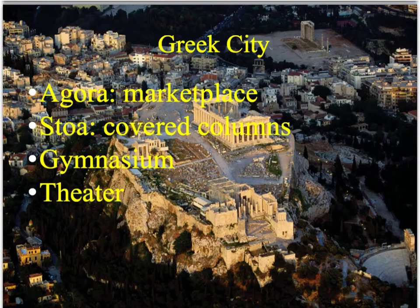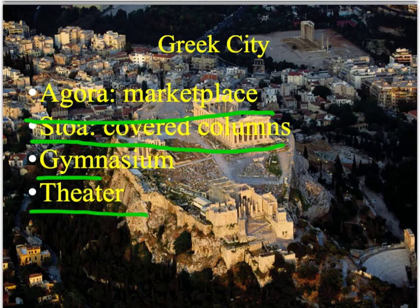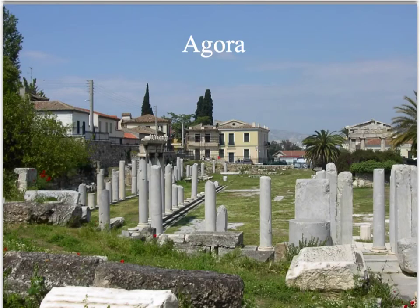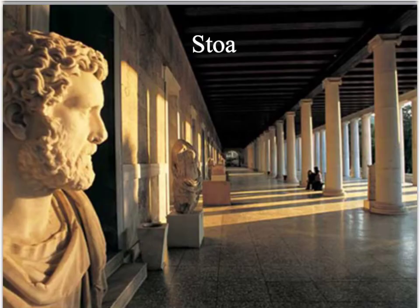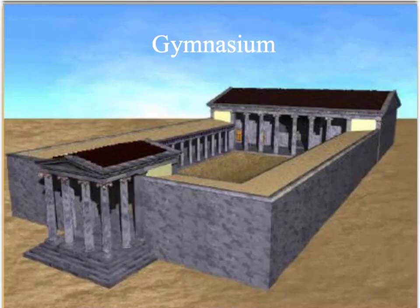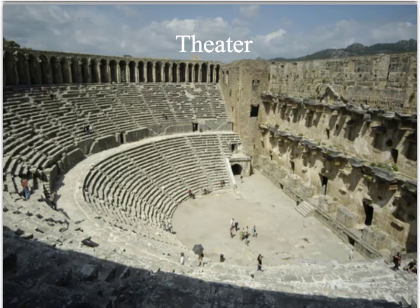Let's do a little tour around the city. You've seen the agora — the marketplace — before. The stoa are long, covered columns. The gymnasium is the origin of our modern word 'gym' — where people work out. And then there's the theater — if you'd like to learn more about Greek theater, there's a separate video with a lot of cool information on that.